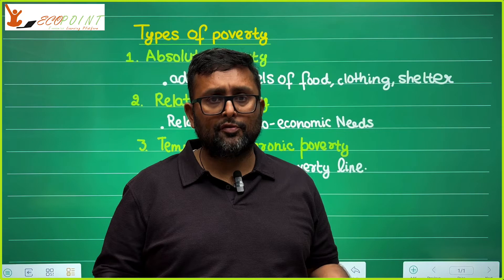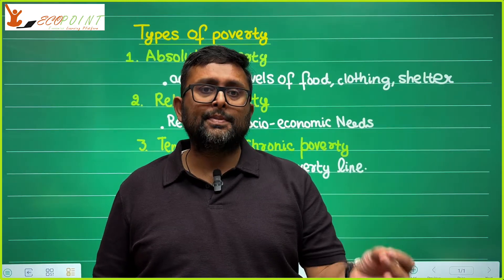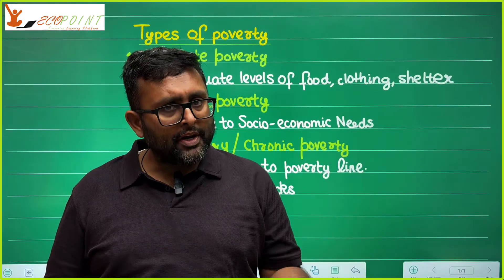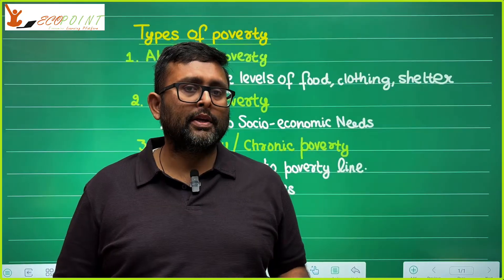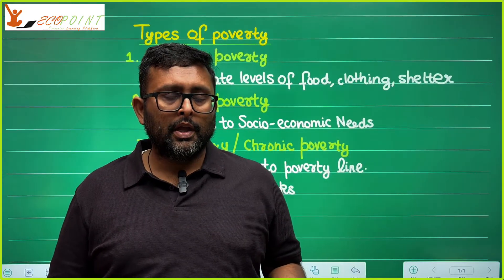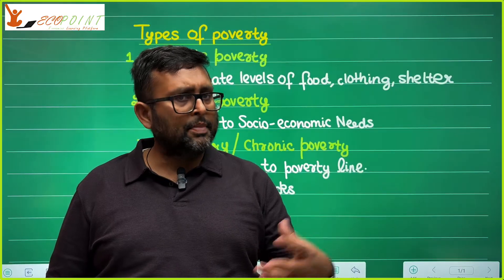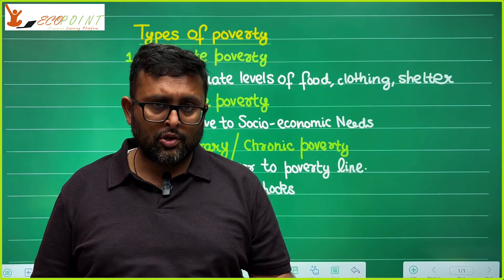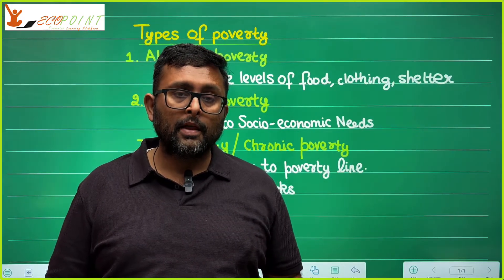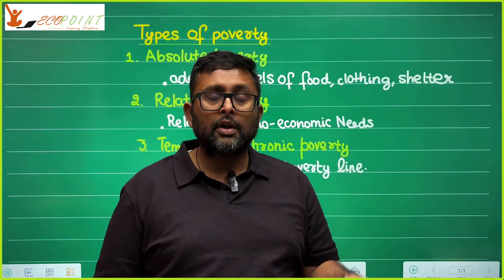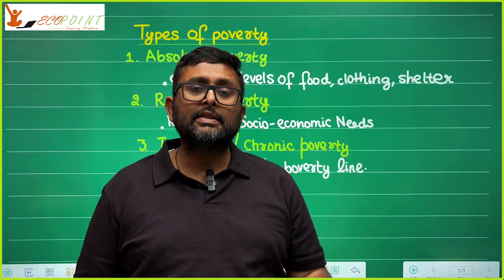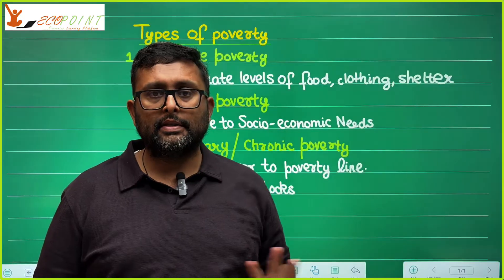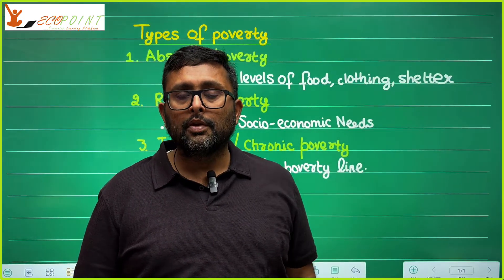There are different types of poverty. One is absolute poverty. In order to live, you need an adequate amount of food, adequate amount of clothing, and adequate amount of shelter. If you don't have these, the person is considered to be poor. If a person's income — or a household's income — is not such that it can provide adequate food, shelter, and clothing, that person or household is absolutely poor. That is absolute poverty.